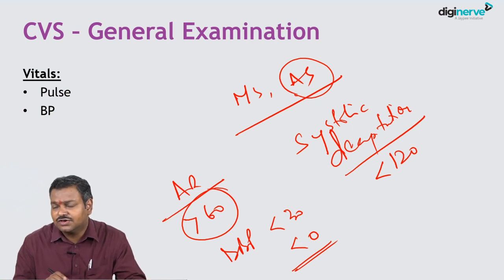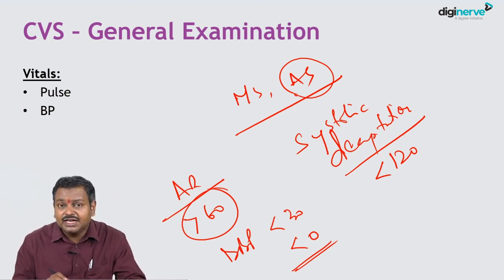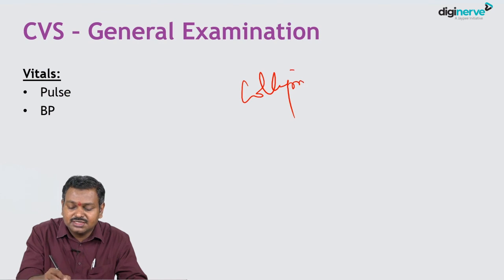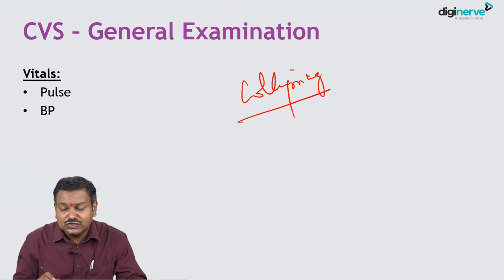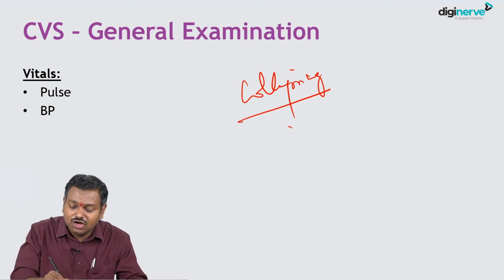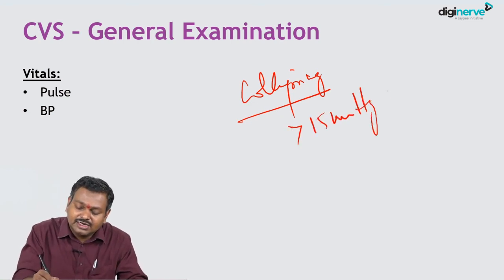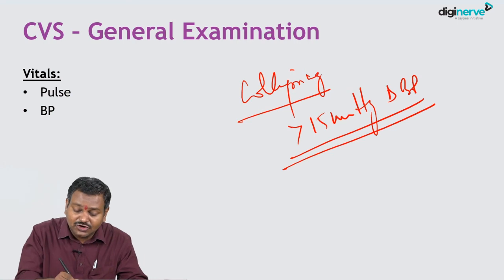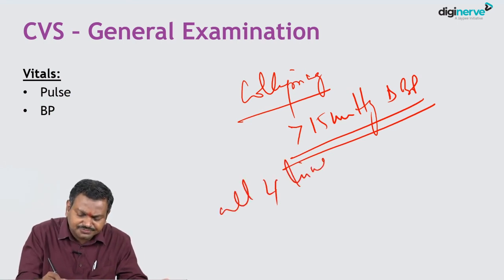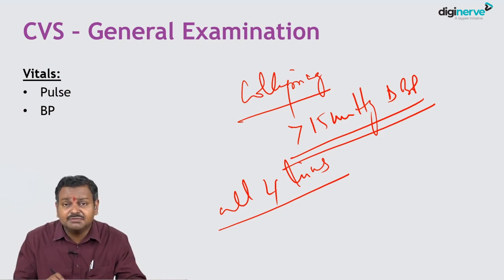In aortic regurgitation, Korotkoff sounds may be heard down to zero, so phase four should be used for the diastolic blood pressure. The collapsing pulse can be objectively demonstrated by checking blood pressure with the hands down, then raising the hands and rechecking — a drop of more than 15 mmHg in diastolic blood pressure confirms the collapsing pulse. Blood pressures should also be checked in all four limbs, as they can differ significantly in cardiac conditions.